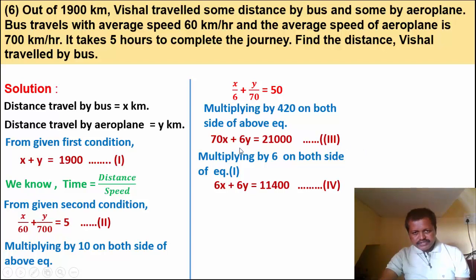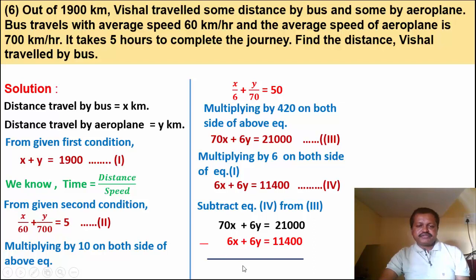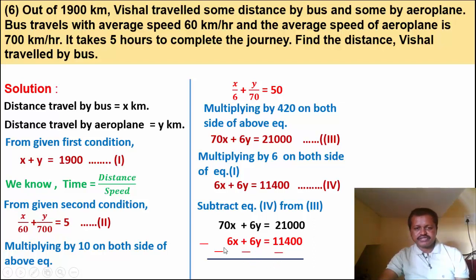Equation 3 has plus 6y and equation 4 has plus 6y, so subtract equation 4 from equation 3. Equation 3: 70x plus 6y equals 21000. Minus equation 4: 6x plus 6y equals 11400. Subtracting: 70x minus 6x gives 64x; 6y minus 6y cancels; 21000 minus 11400 gives 9600.